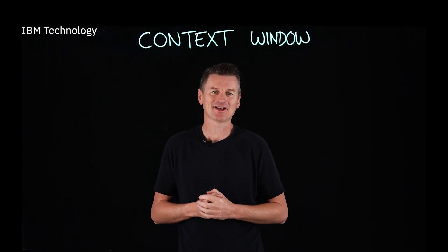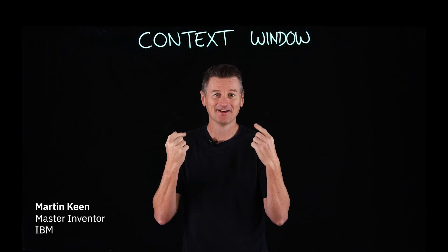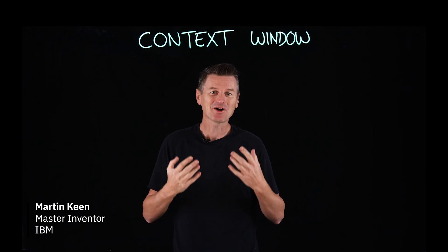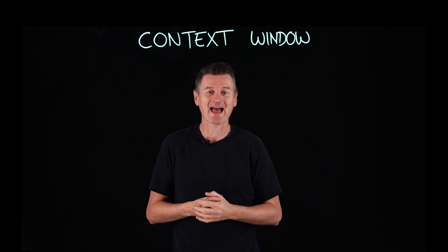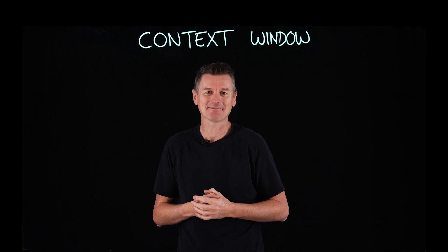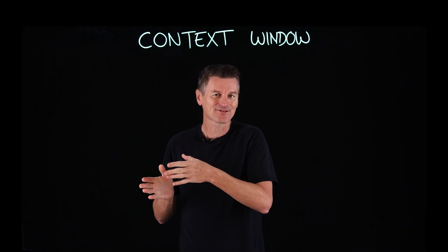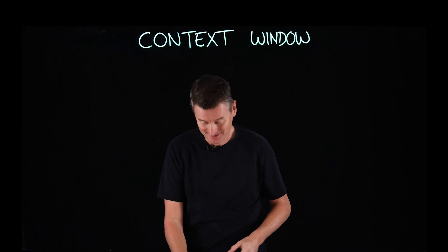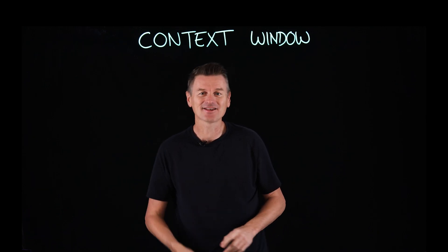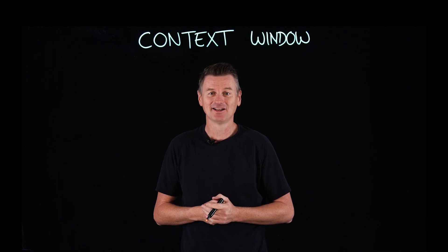In the context of large language models, what is a context window? Well, it's the equivalent of its working memory. It determines how long of a conversation the LLM can carry out without forgetting details from earlier in the exchange. And allow me to illustrate this using the scientifically recognized IBU scale — that's International BLAR Units.